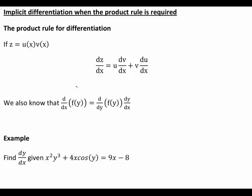When do we use implicit differentiation? If we are finding the derivative of y with respect to x, we would use it if we have some expression with a mixture of x and y terms, where it is difficult or impossible to make y the subject, such that it is easiest to differentiate term by term with respect to x.